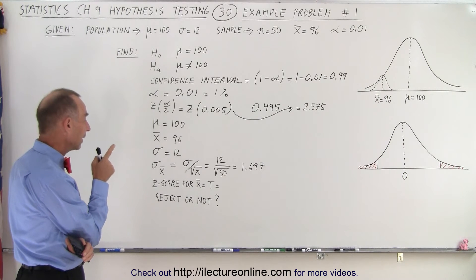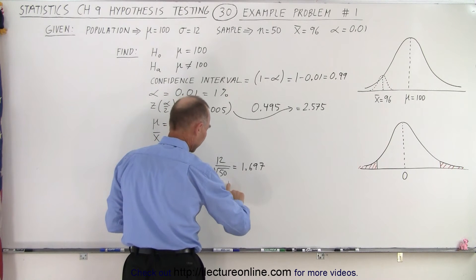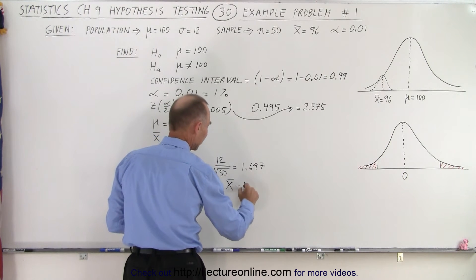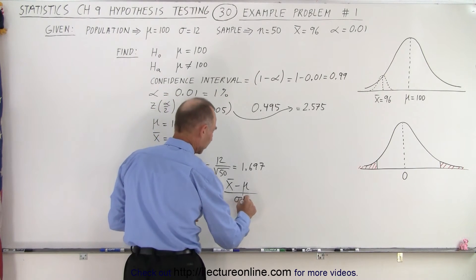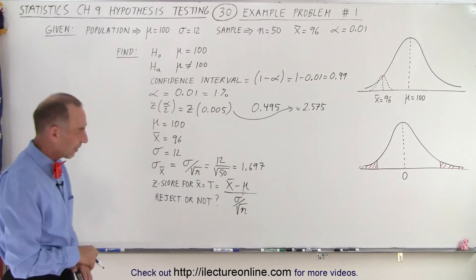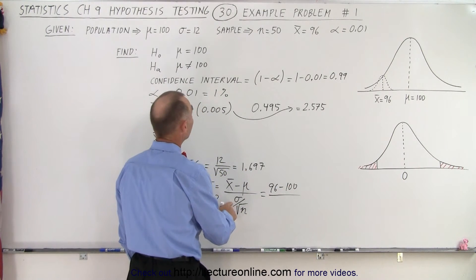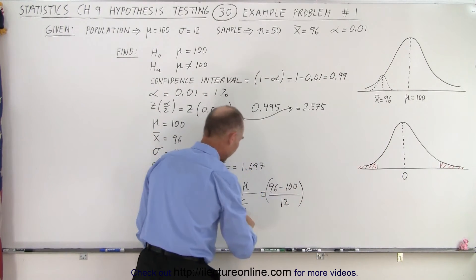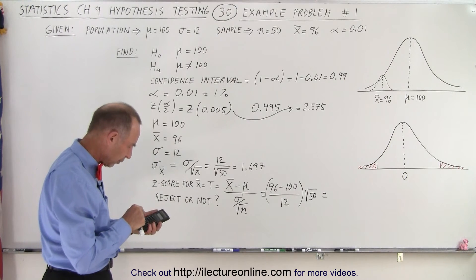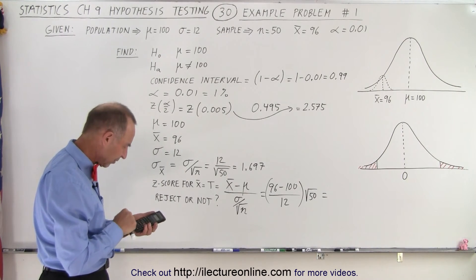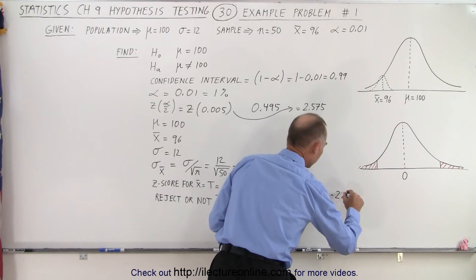Now we're looking for the z-score for the sample — the test statistic. By definition, that is equal to the mean of the sample minus the mean of the population, divided by the standard deviation of the population divided by the square root of the sample size. So this is going to be equal to 96 minus 100, divided by 12, multiplied by the square root of 50. That's minus 4 divided by 12, times the square root of 50, and we get minus 2.357.